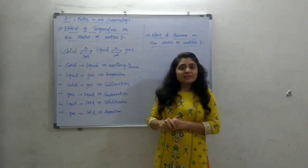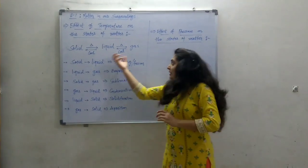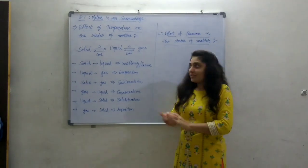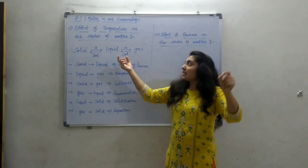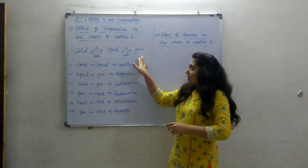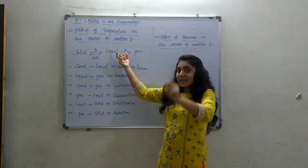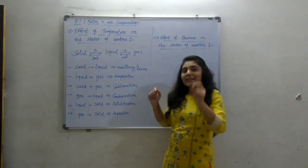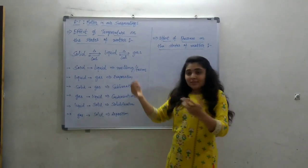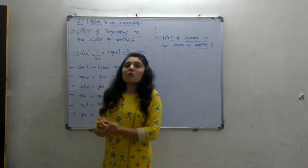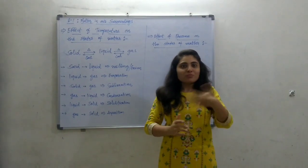When liquid is heated to gaseous state, it doesn't simply convert by just heating. At a definite temperature, the liquid starts converting into gaseous state. This process is called evaporation or vaporization. The temperature at which the liquid starts converting to gaseous state is called the boiling point. For example, the boiling point of water is 100°C. At 100°C, water starts converting to vapor.